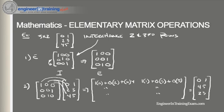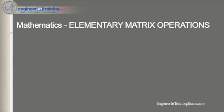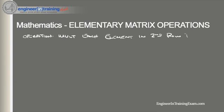Let's look at another example. Suppose we are asked to multiply each element in the second row of a 2 by 3 matrix A by 7. So our operation is: multiply each element in the second row by 7. Our matrix A is given as 0, 1, 2, 3, 4, 5. Once again we want to first find E.